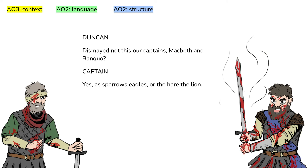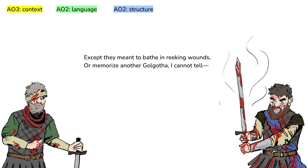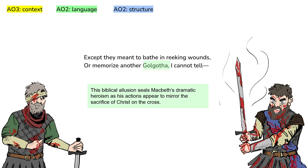Later on in the scene, the captain describes the second battle between Duncan's forces and the Norwegian lord Sueno. Symbols are employed to describe Macbeth and Banquo as eagles and lions — both animals which connote strength and majesty — paired with the sparrows and hare of their opponents, a comparison which clearly paints Macbeth and Banquo as predators. The gory resolution is brought to a head when Shakespeare compares the scene of the battle to Golgotha, the site of Christ's crucifixion in the Bible, which to Jacobeans would symbolise both a scene of unimaginable horror but also salvation. This biblical allusion seals Macbeth's dramatic heroism, as his selfless decision to charge into a desperate battle perhaps mirrors the sacrifice of Christ. To the highly religious Jacobean audience, this comparison may not have gone unnoticed.